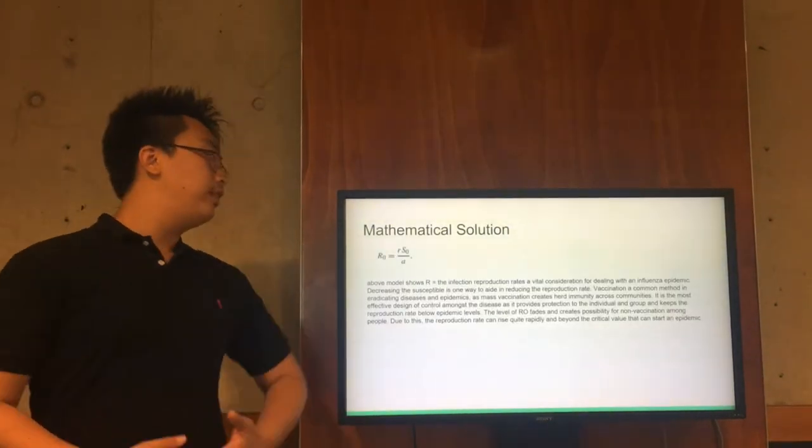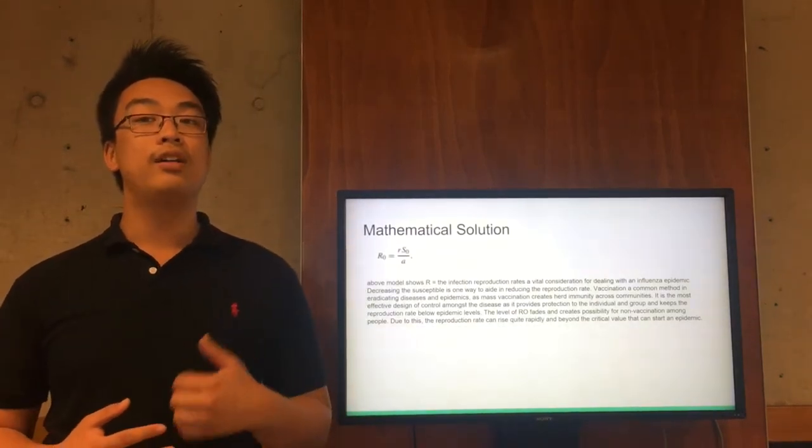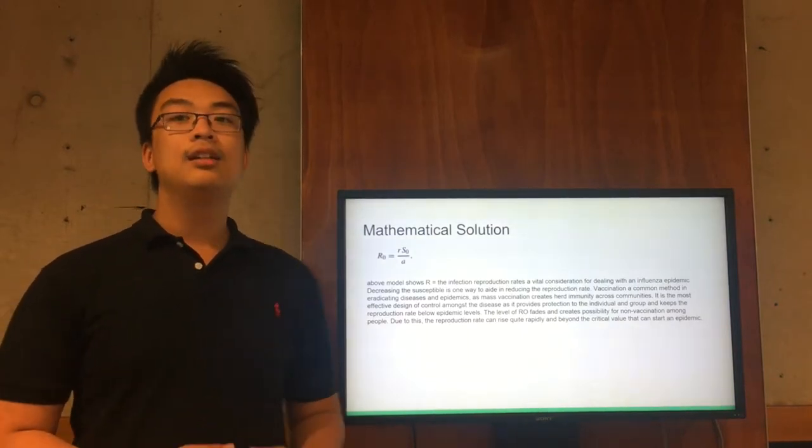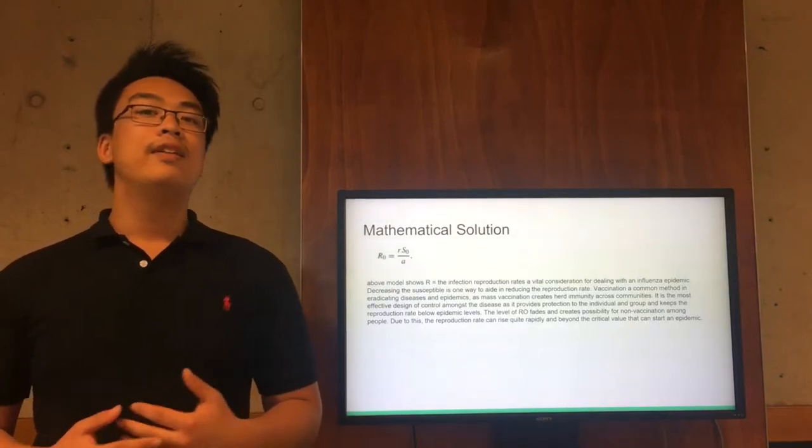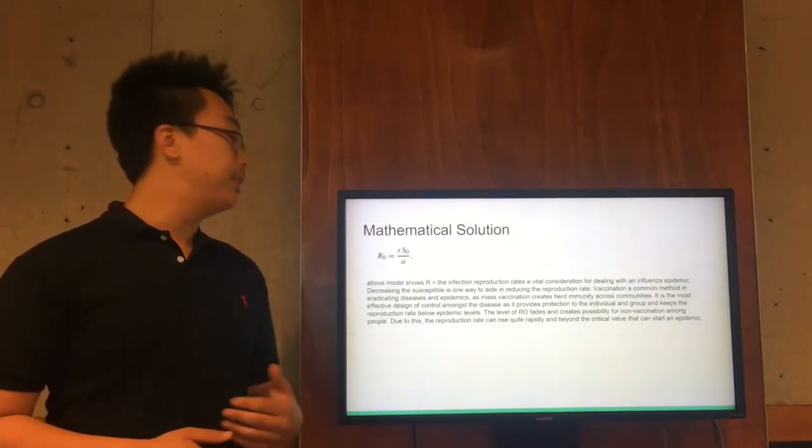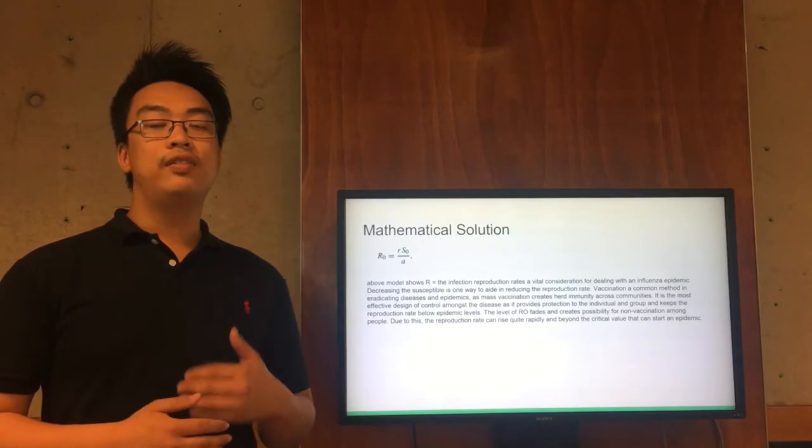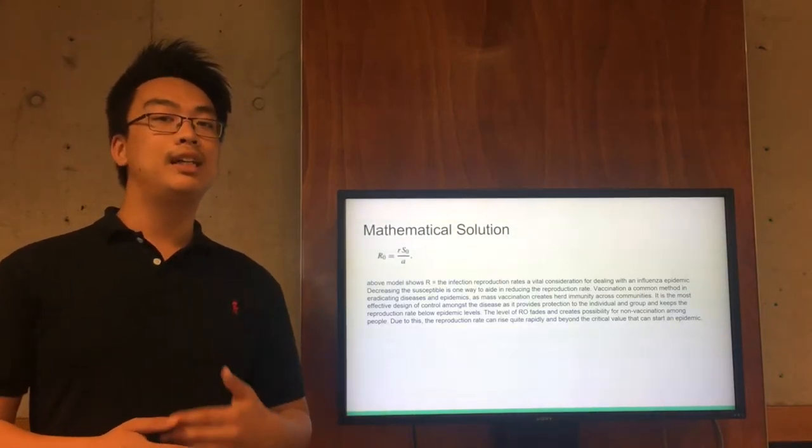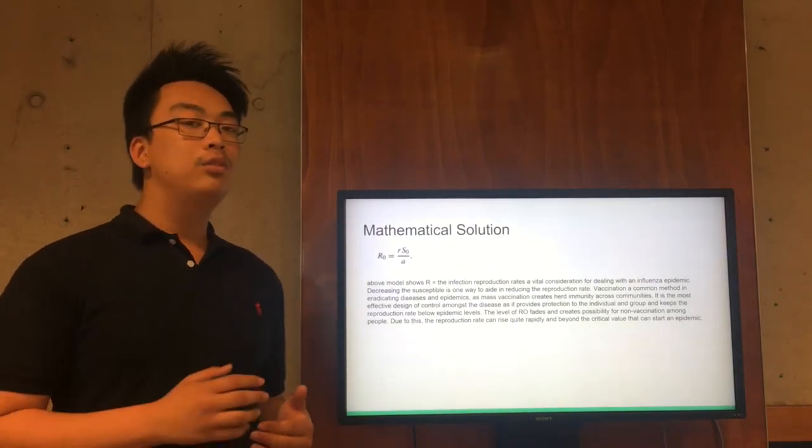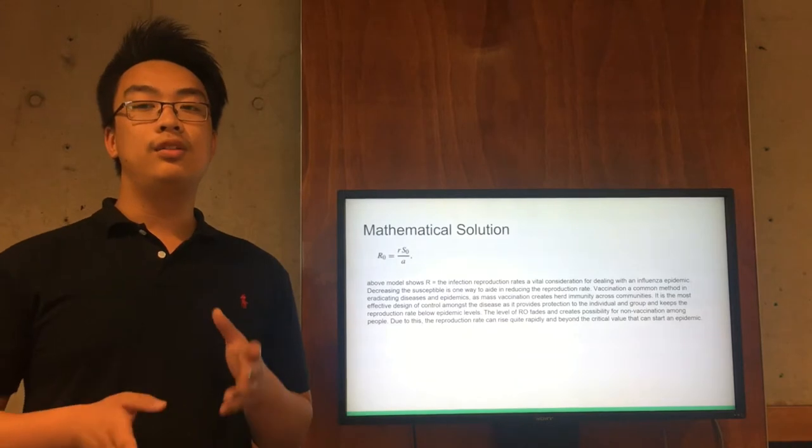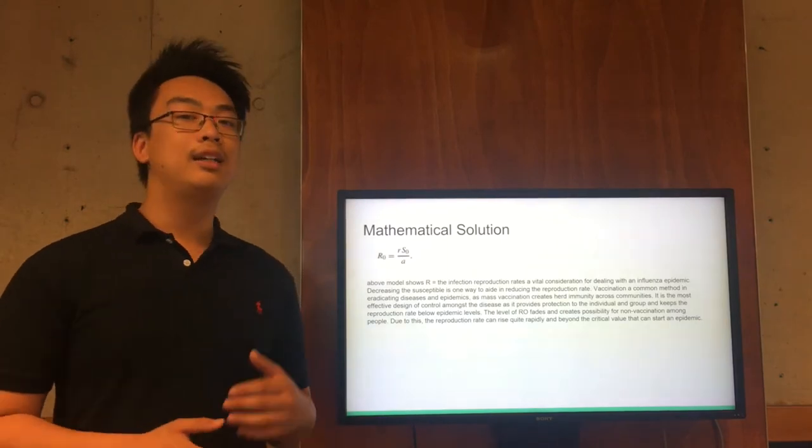So as you can see here this is the R value that's been given to us. The R value is the infection reproduction rate of vital consideration for dealing with influenza epidemics. Decreasing the susceptible is one way to aid in reducing the reproduction rate. Vaccination is a common method in eradicating diseases and epidemics. Mass vaccination creates herd immunity across the communities which is also the most effective design of control amongst the diseases. It provides protection to individuals and groups to keep the reproduction rate below epidemic levels. The levels of R naught fades and creates possibilities for non-vaccinations among people. Due to this the reproduction rates can rise quite rapidly and beyond the critical value that can start an epidemic.